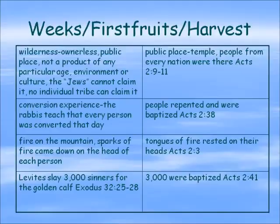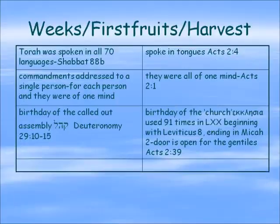The rabbis teach that at Sinai every person was converted that day, and we see that in Jerusalem the people repented, were baptized, and their minds were changed. At Sinai fire came down on the mountain. It is also taught by the rabbis that sparks of fire came down on the head of each person, and we see in Acts that tongues of fire rested on the heads of each of the disciples. As a result of the golden calf event the Levites slew 3,000 sinners, and we see a reconciliation of that in the fact that 3,000 were baptized in Jerusalem. It is taught in the Talmud in Shabbat 88b that the Torah was spoken in all 70 languages, and we see the disciples speaking in tongues in Jerusalem.